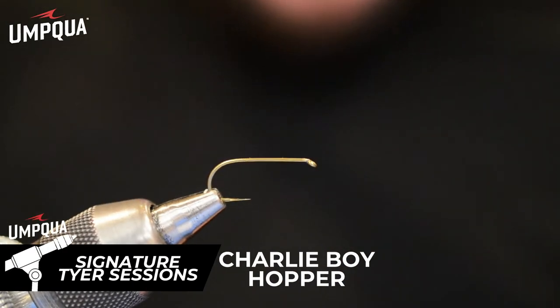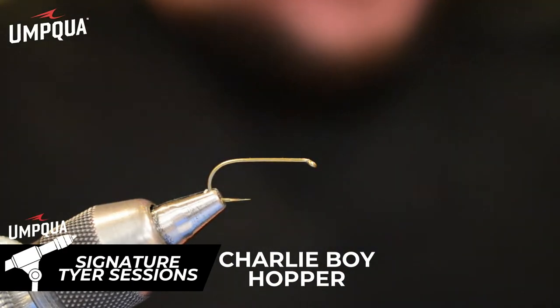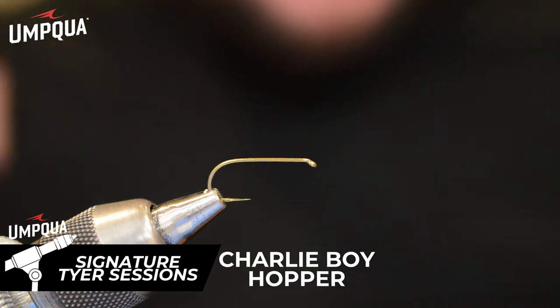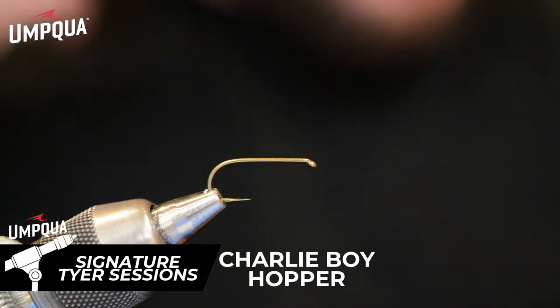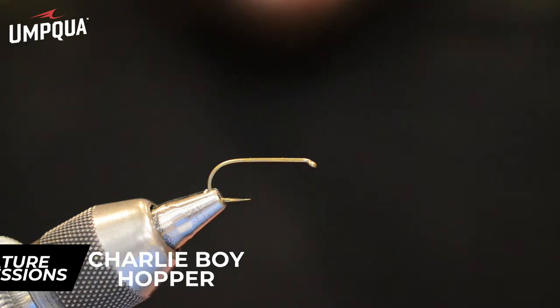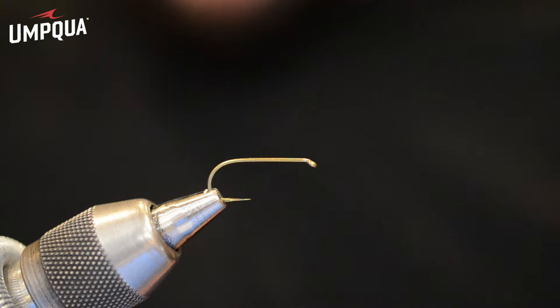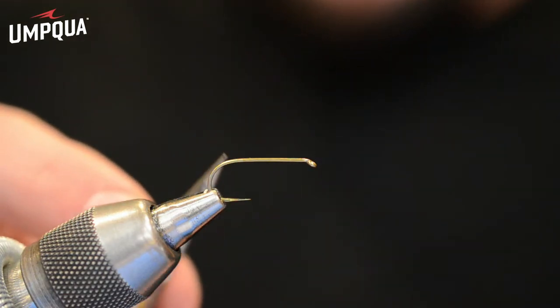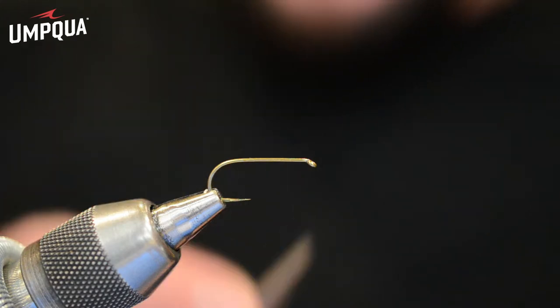All right, let's tie a Charlie Boy Hopper. Obviously, this is one of my favorite flies. I named this after my oldest son, Charlie. And it's a pretty quick little hopper pattern to tie. I came up with it about 20 years ago or so. This one's going to be tied on a Tiemco 100 SP BL, size 8 is what this is.